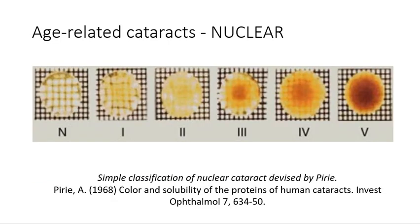A very simple classification system for grading nuclear cataracts was developed by Pirie back in the 1960s. It classifies the lens into different categories depending on the colour of the nucleus. Category 1 is a fairly light yellow, transparent colour — you can see the crosshatch behind it indicating it's not taking up too much space. They then move on to a much more severe colour and eventually brown, becoming more yellow and orange as the grade gets higher.